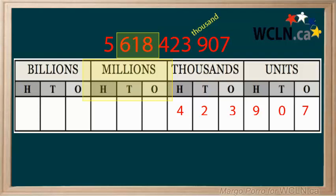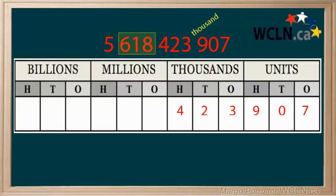After thousands comes millions: one millions, ten millions, hundred millions, a space, and then billions. Read the group of three digits in the millions period together, followed by the word million, like this: six hundred eighteen million. The eight represents eight million. The eight is followed by six zeros, just like there are six places after the millions on the chart.